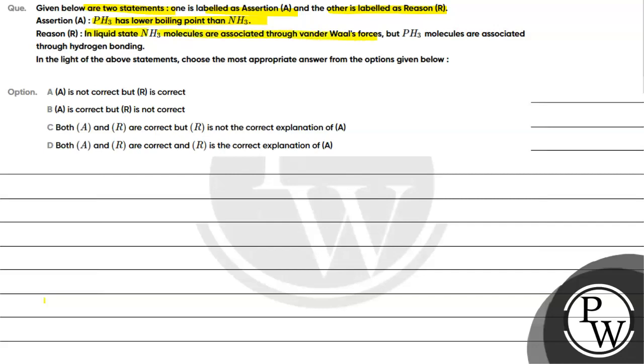pH3 molecules are associated through Van der Waals forces, but NH3 molecules are associated through hydrogen bonding. In the light of above statements, choose the most appropriate answer from the options given below.